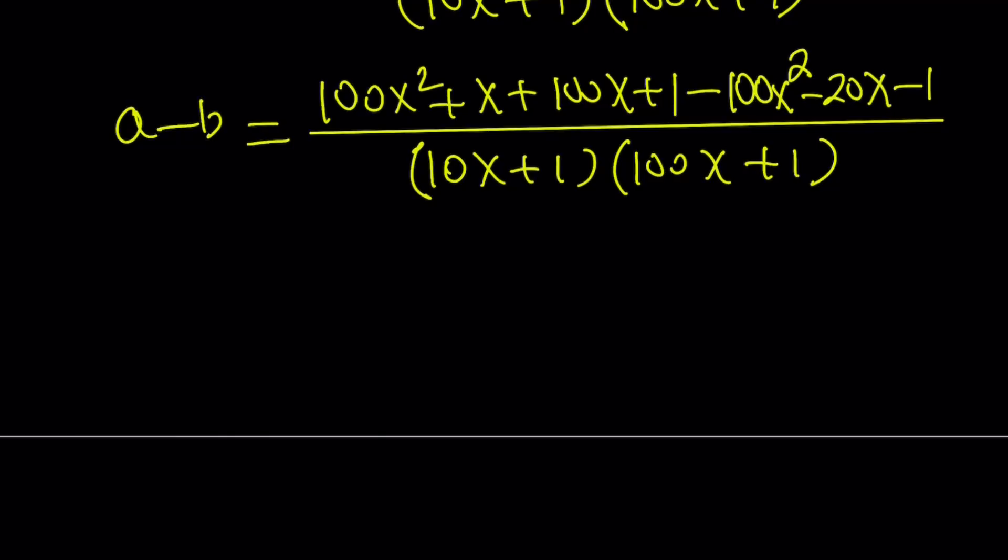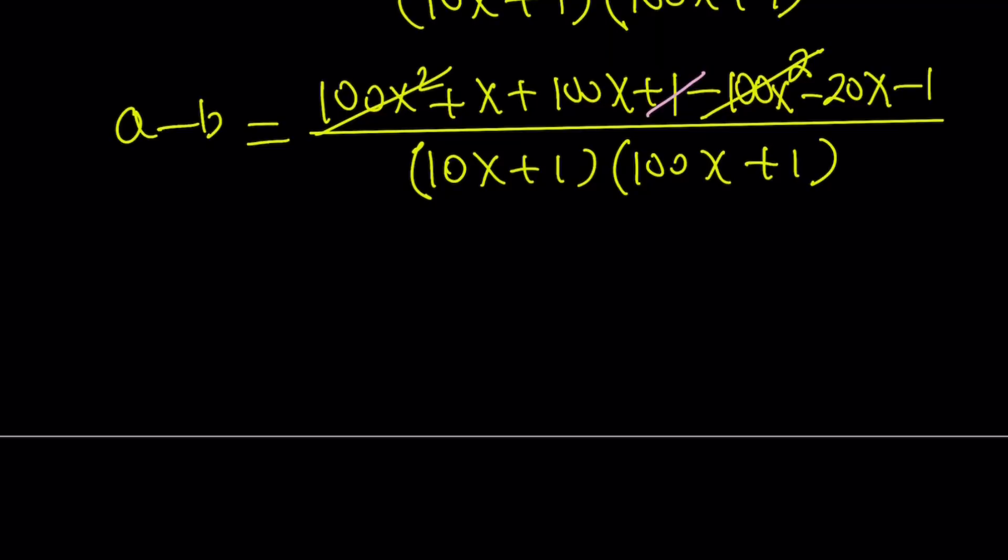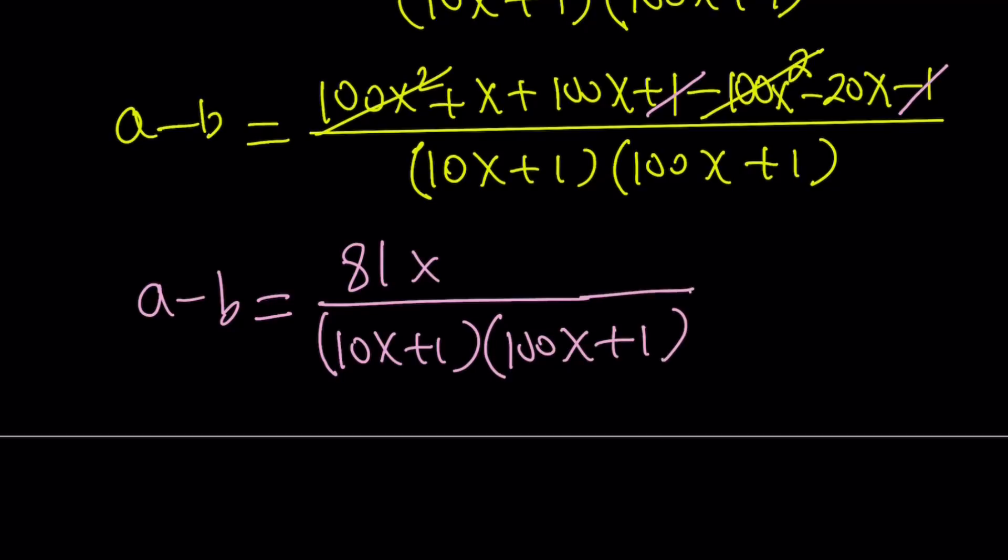So here we can cancel out, let's see, 100x^2 cancels out. And then 1 cancels out. And we end up with x terms only. So a minus b becomes 100 minus 20 is 80, 81x divided by (10x + 1) multiplied by (100x + 1). This is a minus b.